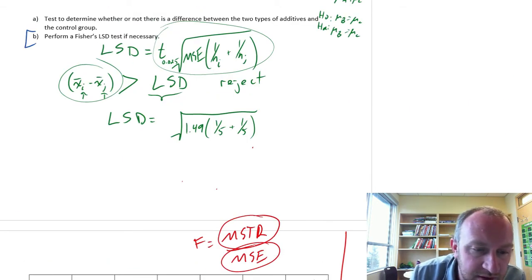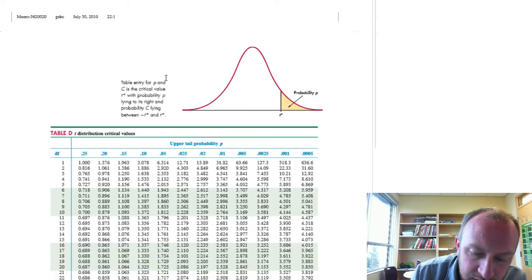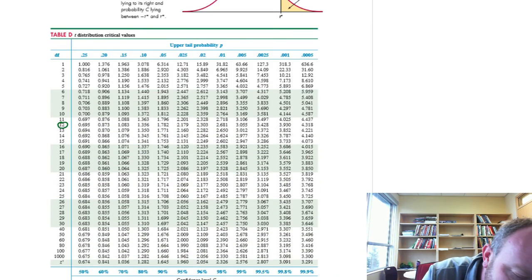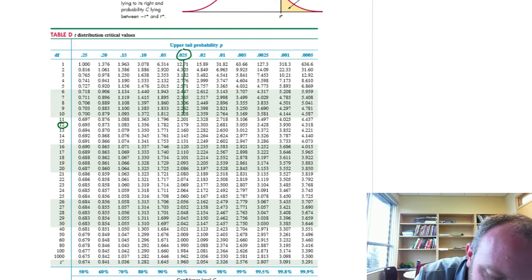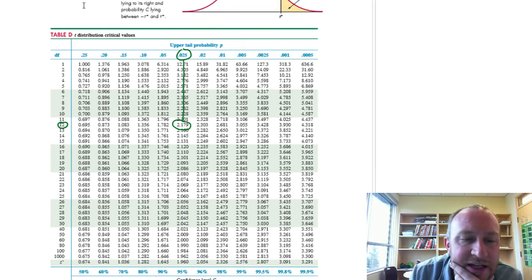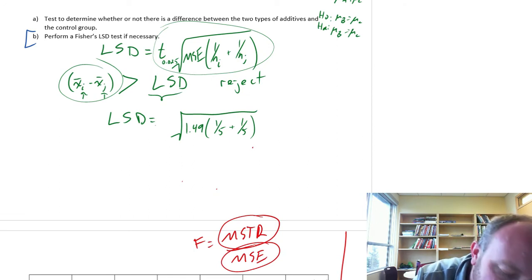If we go into our t-tables, and here's 12 degrees of freedom, a probability of 0.025, that gives us a critical value of 2.179. If I come back here, I have this 2.179.